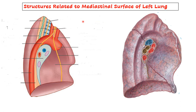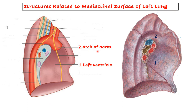Now let us see how you will draw the diagram and identify structures related to the mediastinal surface of the left lung in practical examination. First draw the lung along with its hilum. Then draw the chamber here - mainly the left ventricle and above that the left auricle. After that draw the arch of aorta, which goes over the hilum of the lung. Which vessel arches over the hilum of the left lung? The arch of aorta. Which vessel arches over the hilum of the right lung? The azygous vein. Remember: right vein, left artery.